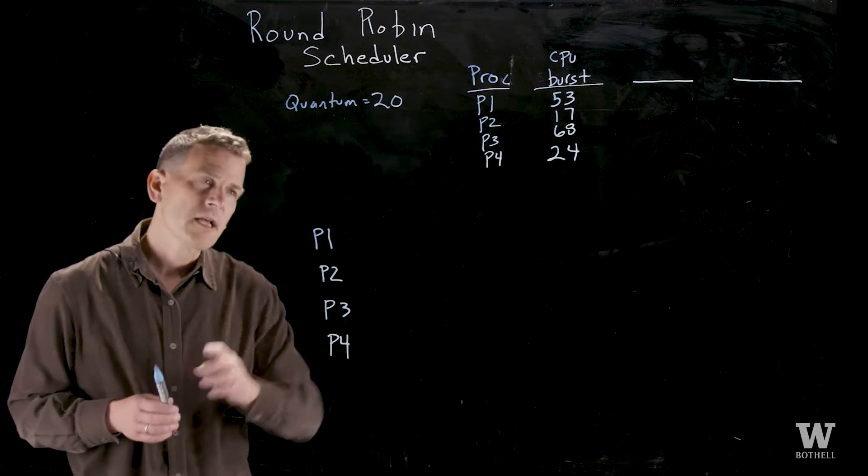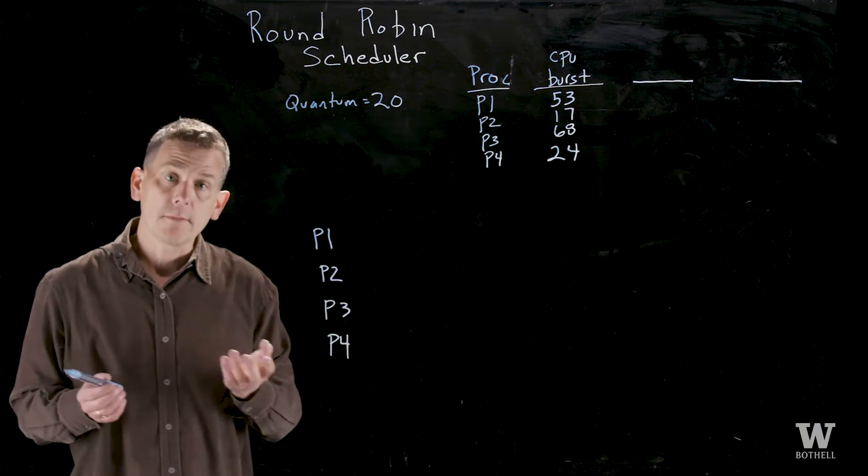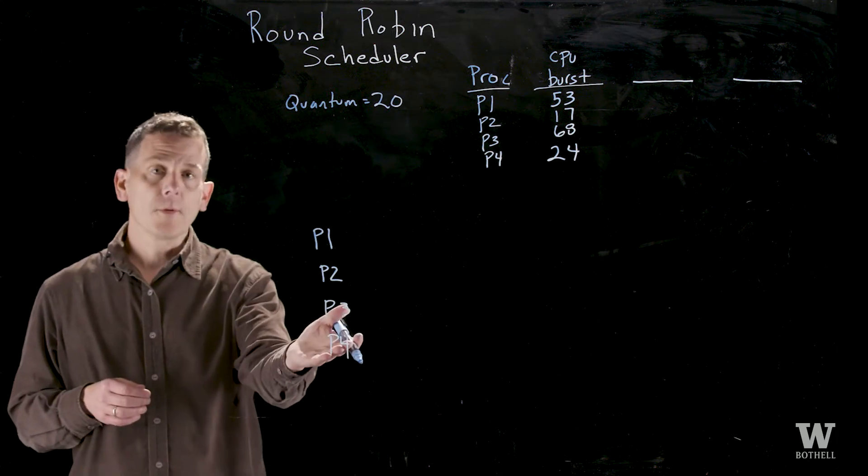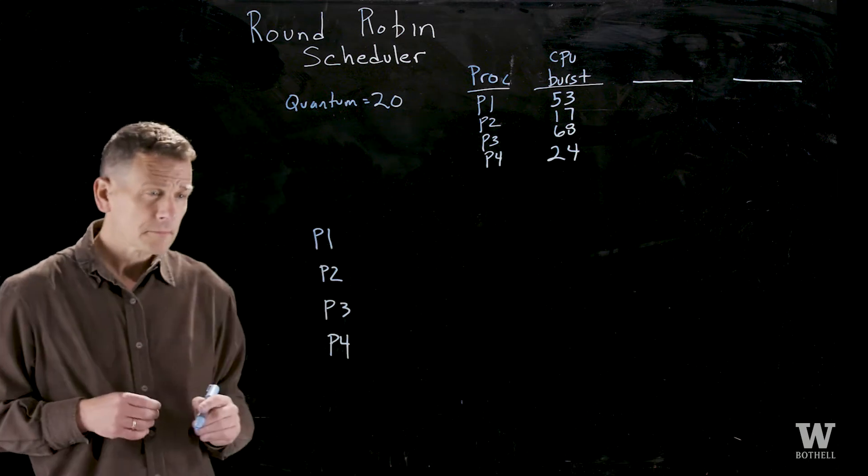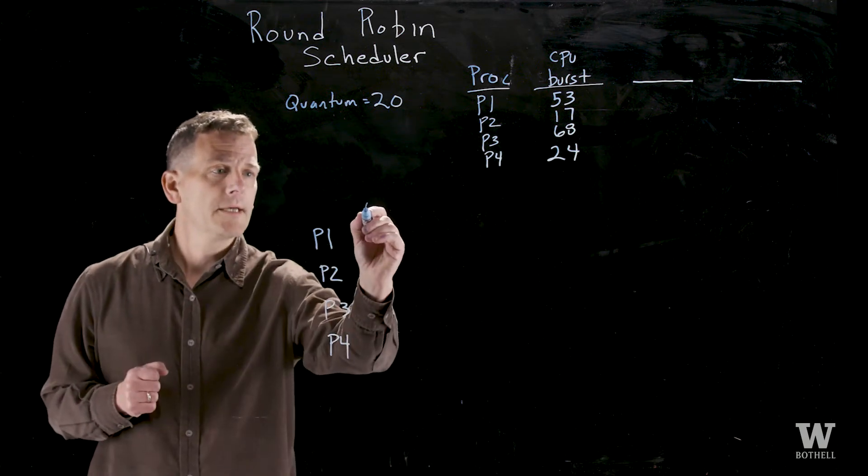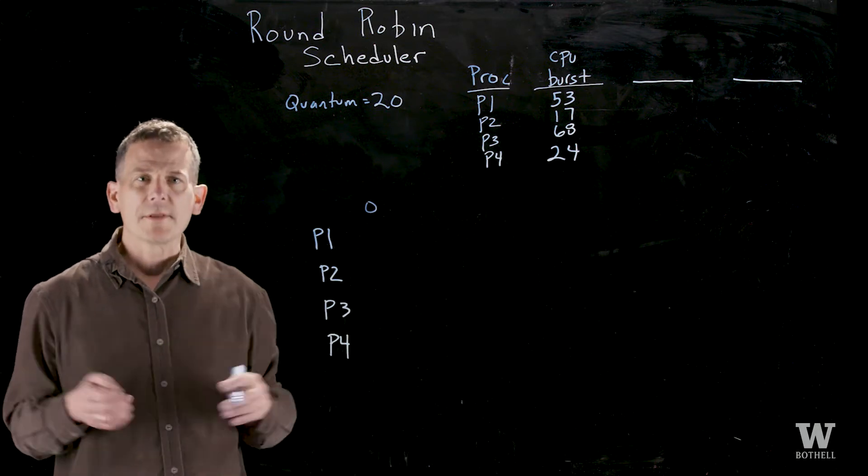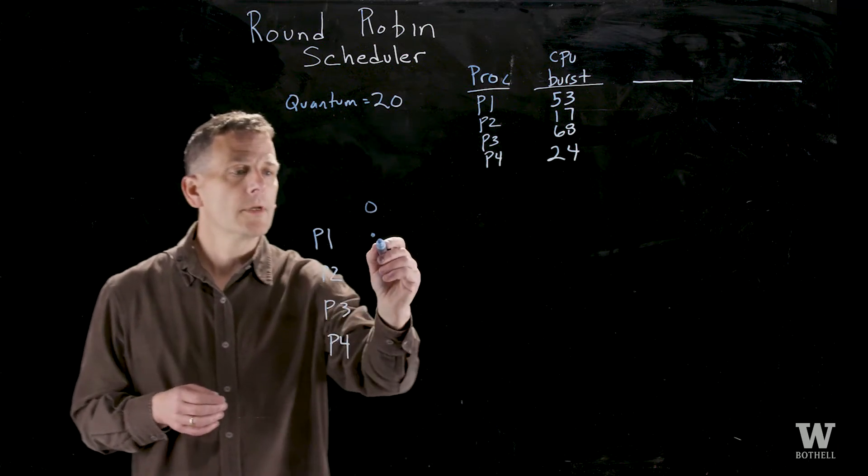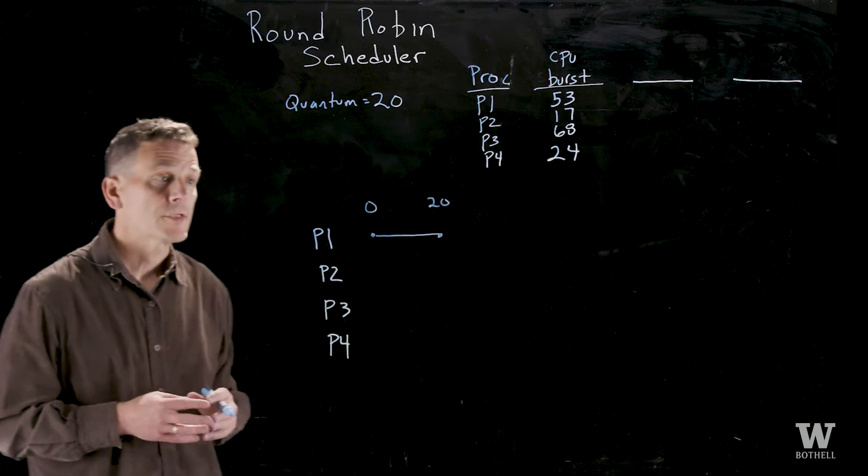Round robin basically says let's circle through giving all the processes 20 time units until they're done. So here I've listed the four processes and time moves to the right. What we'll do is starting at time zero, the scheduler will choose process 1. Let's assume they all came at the same time and it will give process 1 the quantum of 20 milliseconds. So up until time 20, process 1 runs.